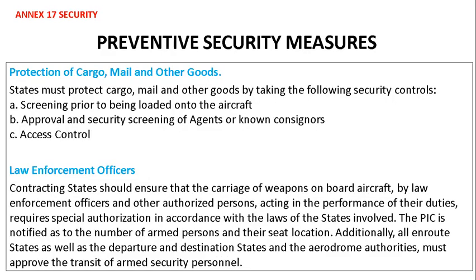Protection of cargo, mail, and other goods: states must protect cargo, mail, and other goods by taking the following security controls — screening prior to being loaded onto the aircraft, approval and security screening of agents or known consignors, and access control.